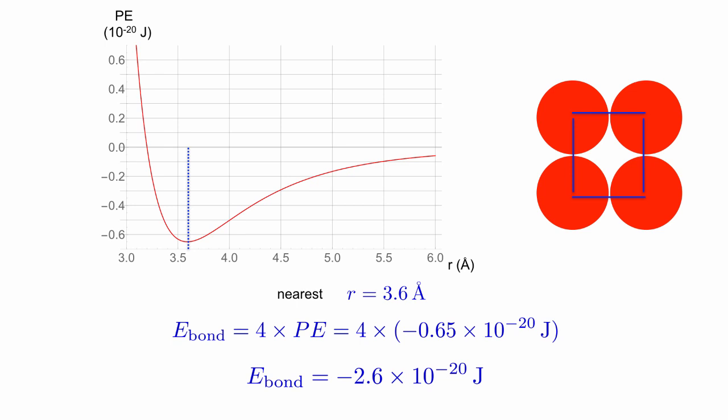Each of these bonds contributes a potential energy of minus 0.65 times 10 to the minus 20 joules. To get the bond energy, we just have to add up these energies, and since all the potential energies are the same, we can just multiply it by 4 to find the bond energy is minus 2.6 times 10 to the minus 20 joules.